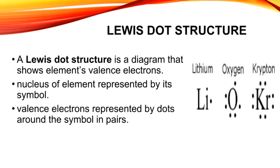Next is Lewis symbols, also known as Lewis dot structures or electron dot diagrams, which are diagrams that represent the valence electrons of an atom. The nucleus of the element is represented by its symbol. Valence electrons are represented by dots around the symbol in pairs.